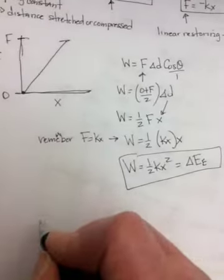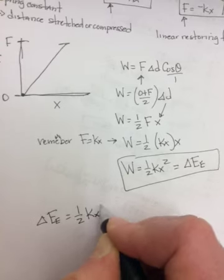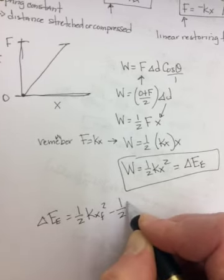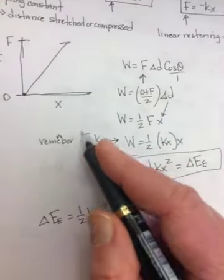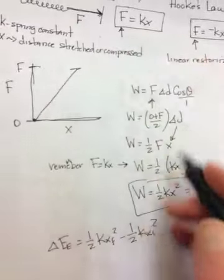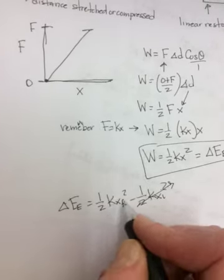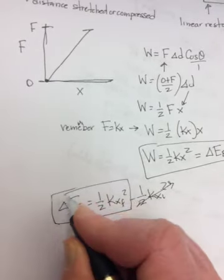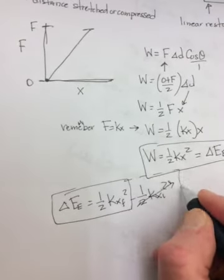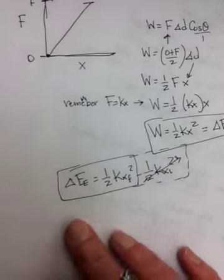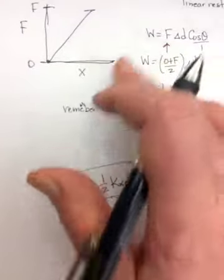Now technically, if it's change in, it really should be one half KX final squared minus one half KX initial squared. But just like in gravitational potential energy, usually initially, it's not stretched. So this is usually always zero. And so the work done will be equal to the change in elastic potential energy, which would be one half KXF squared. And that's equal to the work done. So some of your homework tonight is going to be with this equation and Hooke's law equation.